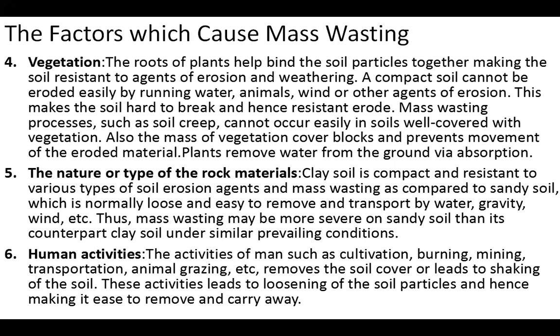The fifth factor is the nature or type of rock materials. For example, clay soil is compact and resistant to various types of soil erosion agents and mass wasting, as compared to sandy soil, which is normally loose and easy to remove and transport by water, gravity, wind, etc. So mass wasting may be more severe on sandy soil than on clay particles under similar prevailing conditions.